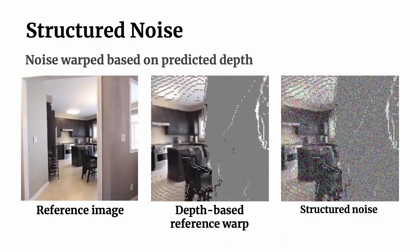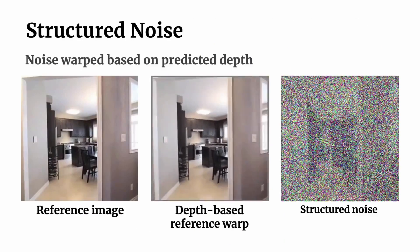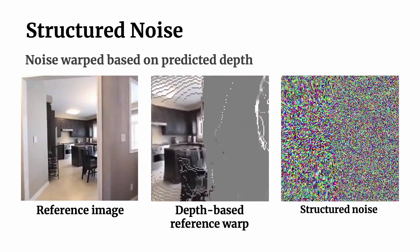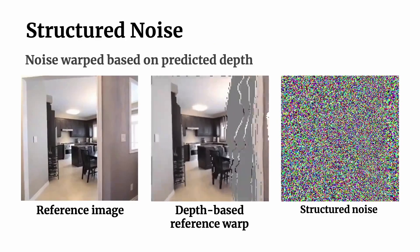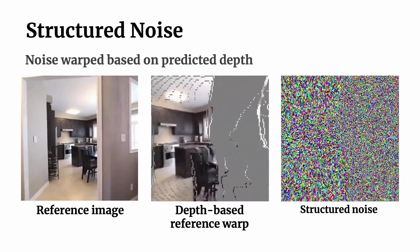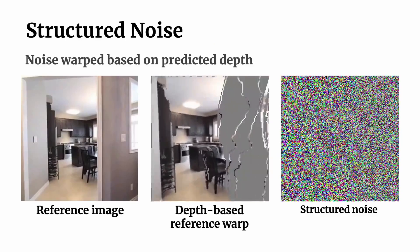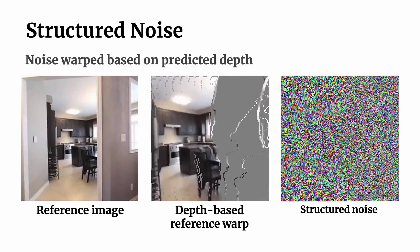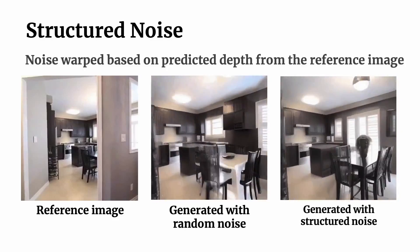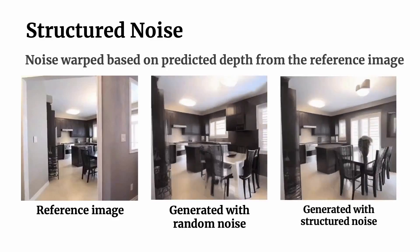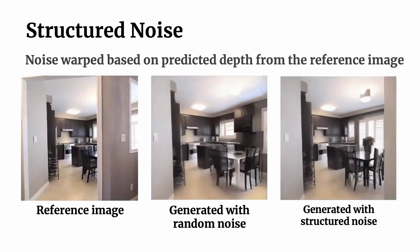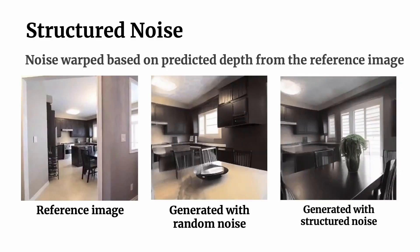We further propose to use structured noise for better consistency. Since in DDPM-based sampling processes, the initial noise correlates with the output, we propose to structure the noise of target views using predicted depth from the reference image. Without structured noise, generations are more likely to be inconsistent or deviate from the input image, for example changing the color of a dining table as shown in this example.